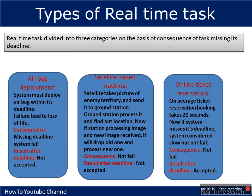For an online ticket reservation system, if the system is expected to complete a booking in 20 to 30 seconds but actually takes 40 or 50 seconds and still books the seat successfully — the deadline is missed but the system is not considered failed, and the result after that deadline is still accepted. So there is no strict role of the deadline here.